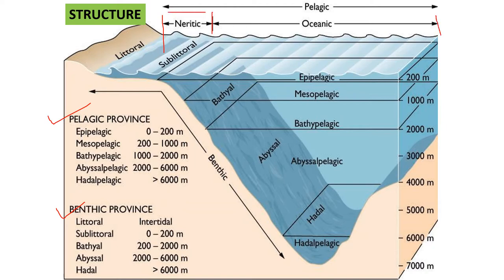The Neritic zone is nearer the coast and the Oceanic zone is the area away from the coast. According to depth, the Pelagic zone is divided into different sub-zones. The Epipelagic is the upper surface of the ocean, 0 to 200 meters depth. Then the Mesopelagic is 200 to 1000 meters, the Bathypelagic is 1000 to 2000 meters, the Abysalpelagic is 2000 to 6000 meters, and the Hadopelagic is beyond 6000 meters depth.